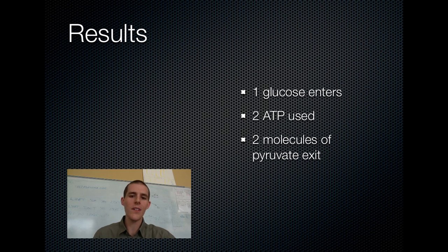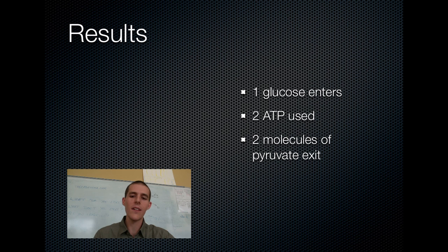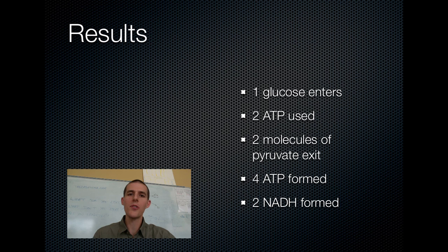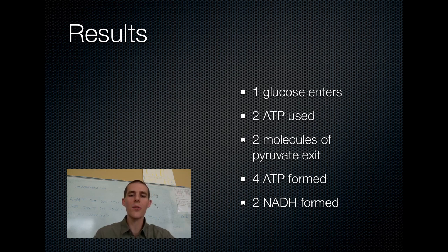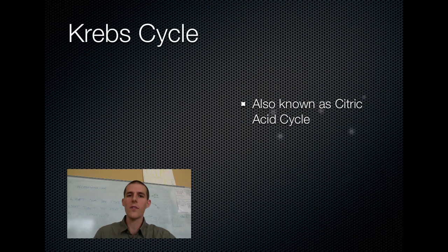The results of glycolysis are as follows. One glucose molecule enters. In the energy utilization stage you use up two ATPs. Coming out of glycolysis, the finished product is a molecule called pyruvate — you get two pyruvate molecules at the end. The process forms four ATPs total and two NADHs, which carry high energy electrons over to the electron transport chain. Those two pyruvates that come out of glycolysis then travel on over to the Krebs cycle.